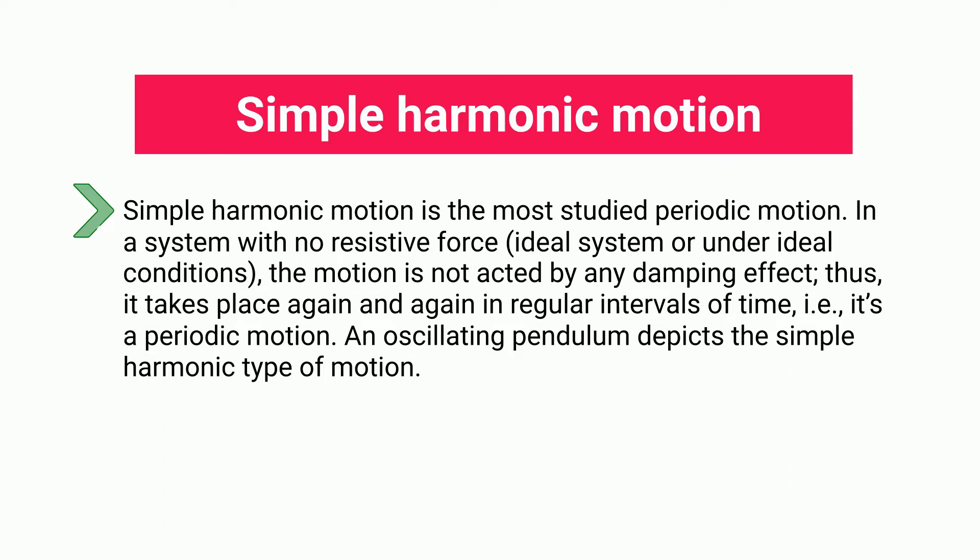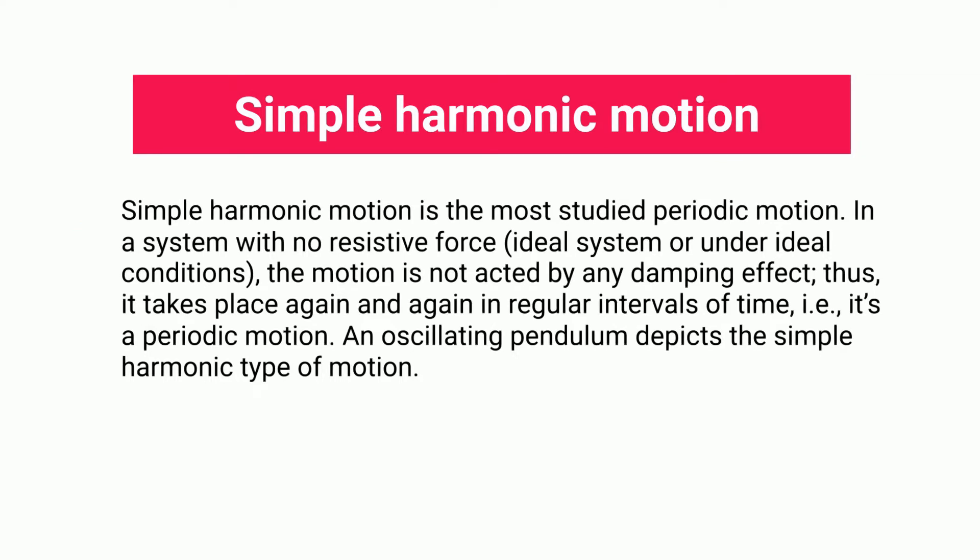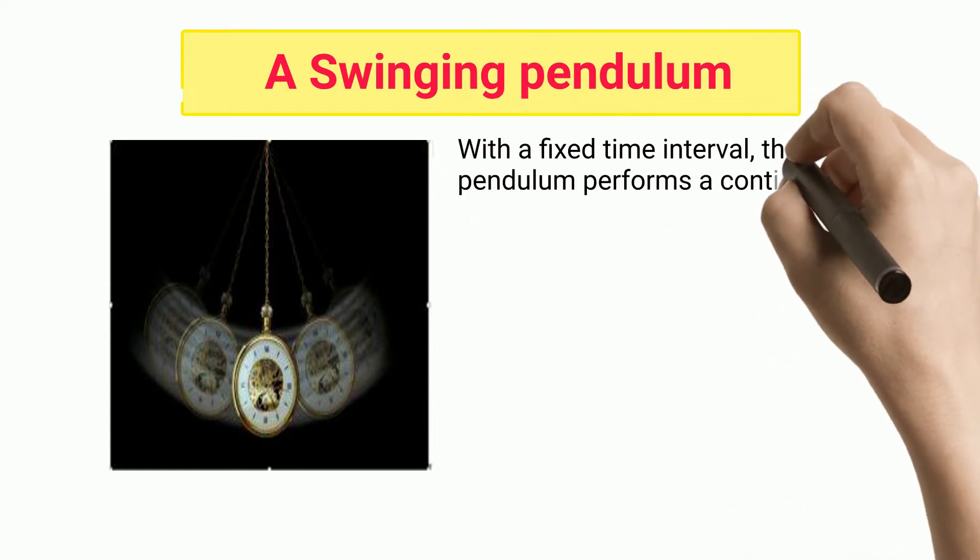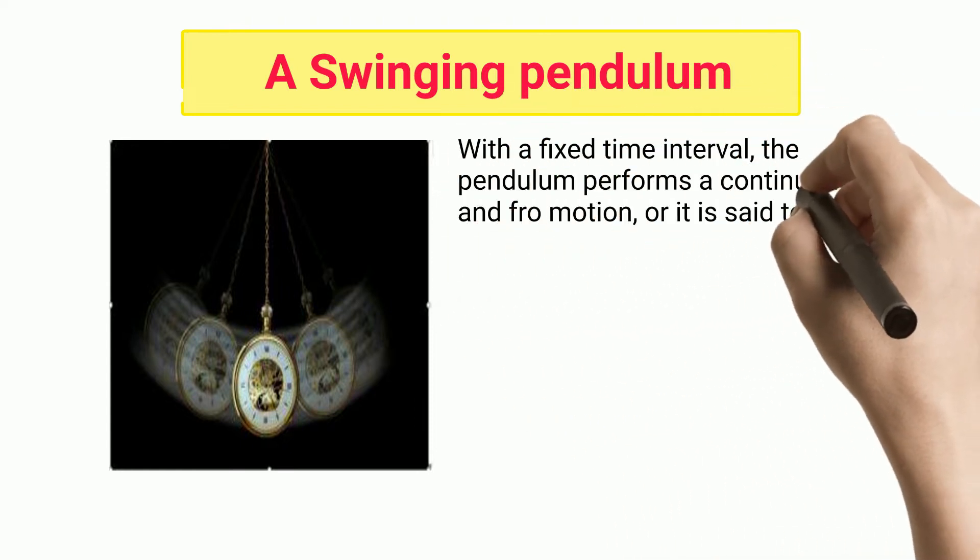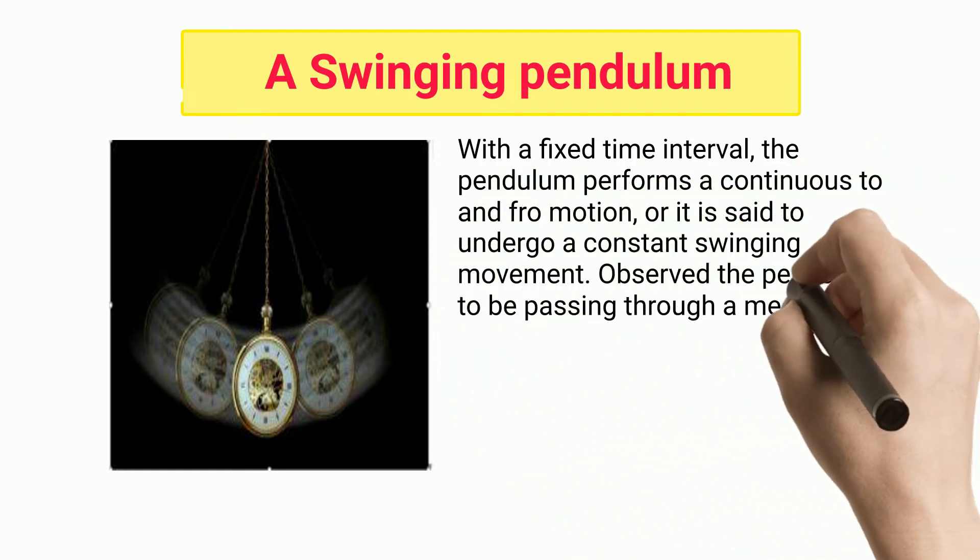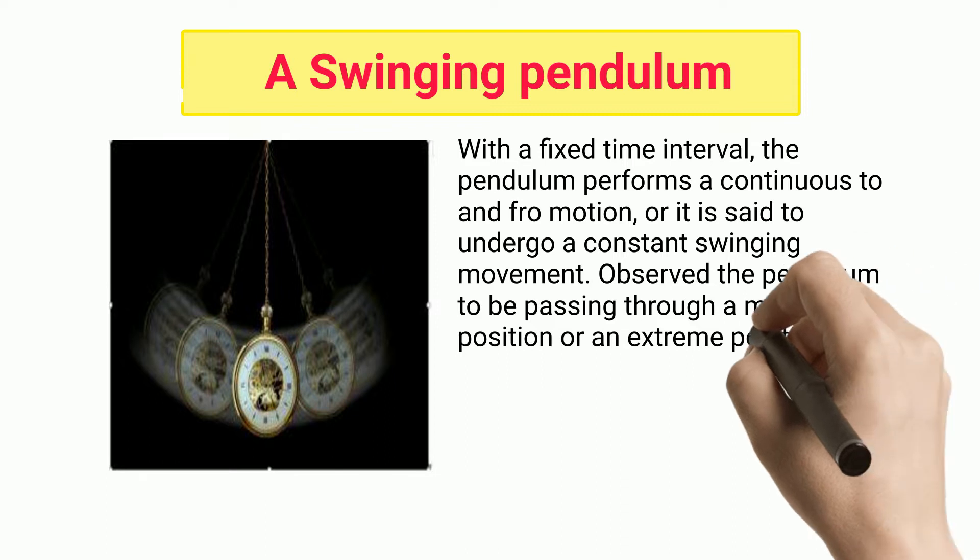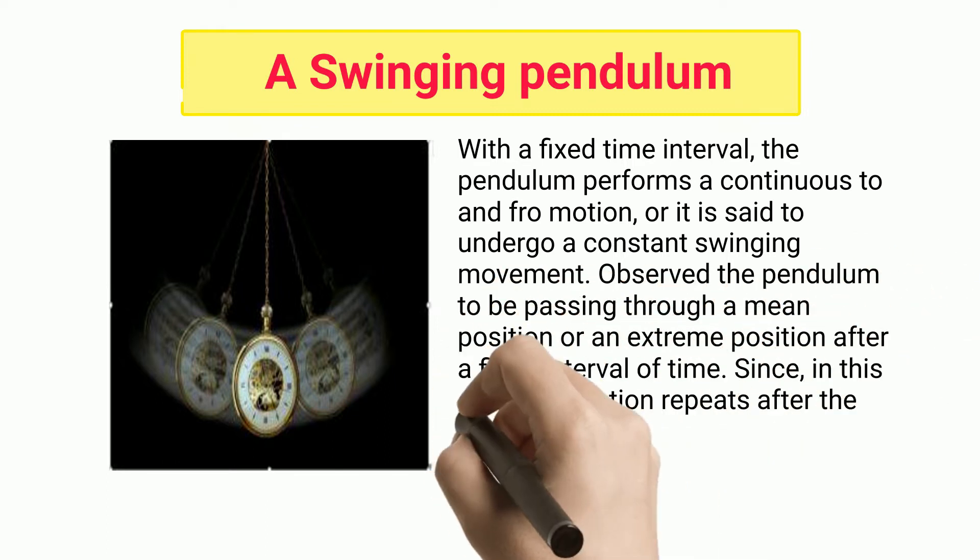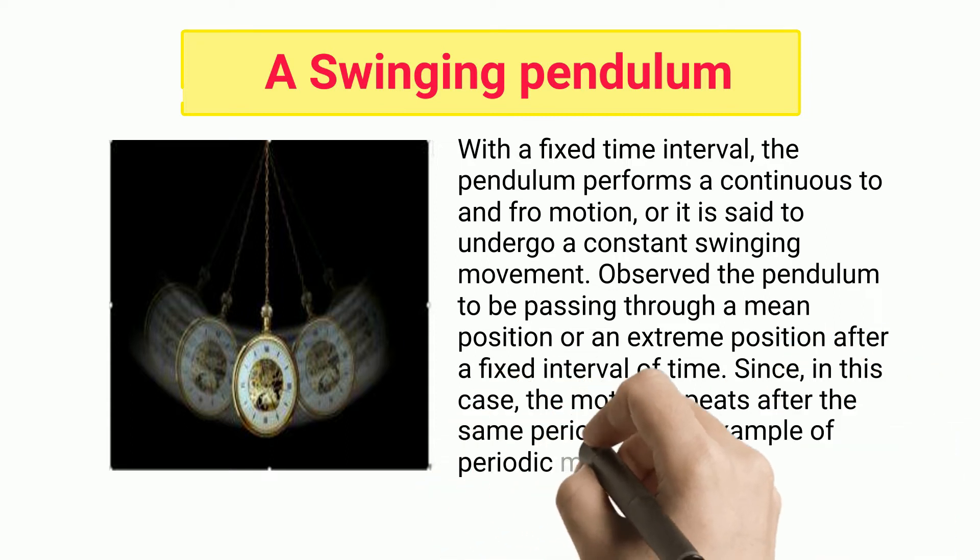An oscillating pendulum depicts the simple harmonic type of motion. A swinging pendulum with a fixed time interval performs a continuous to and fro motion or is said to undergo a constant swinging movement. Observe the pendulum to be passing through a mean position or an extreme position after a fixed interval of time. Since the motion repeats after the same period, it is an example of periodic motion.